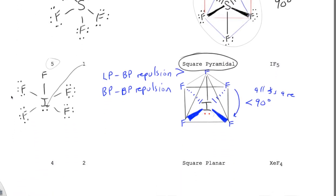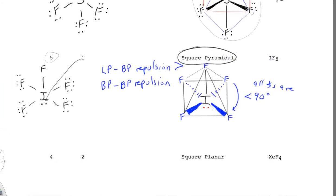Our second possibility with six electron groups, or six pairs of electrons, is IF5. Here we have five bonding pairs of electrons, but we've got one lone pair, and that lone pair pushes all of these up and repels them more than this bonding pair. The shape we have is square pyramidal.